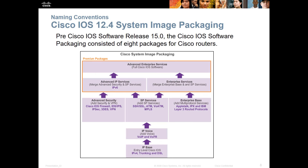Let's talk about system imaging packaging. Normally it comes in a few different flavors. You get the base image — the IP base. If you want additional features, you buy the appropriate IOS. There's IP voice, which adds voice functionality — VoIP and VoFR. If you want additional features, you have advanced security, advanced service provider, and enterprise base. The enterprise base adds layer 3 routing protocols, AppleTalk, IPX, and IBM. The SP services add things like SSL, SSH, MPLS, and ATM.